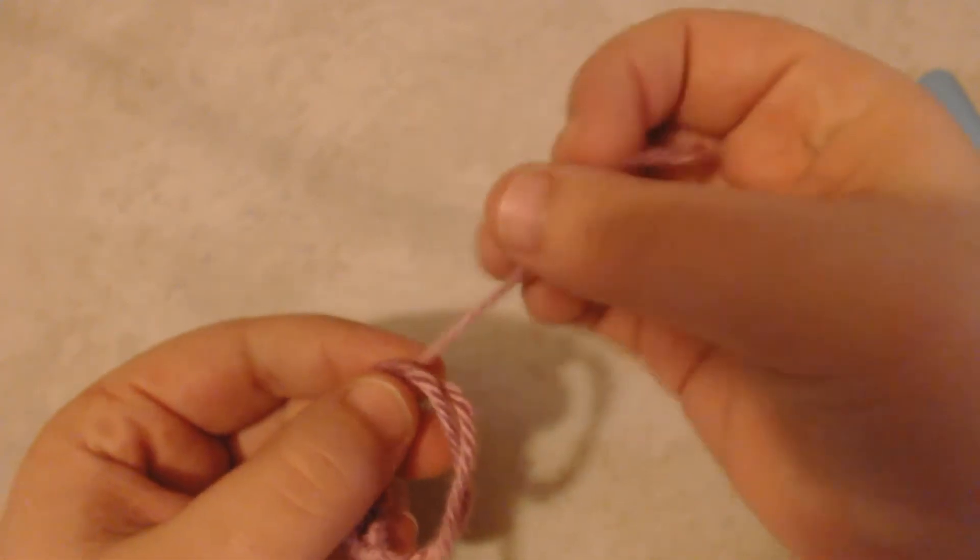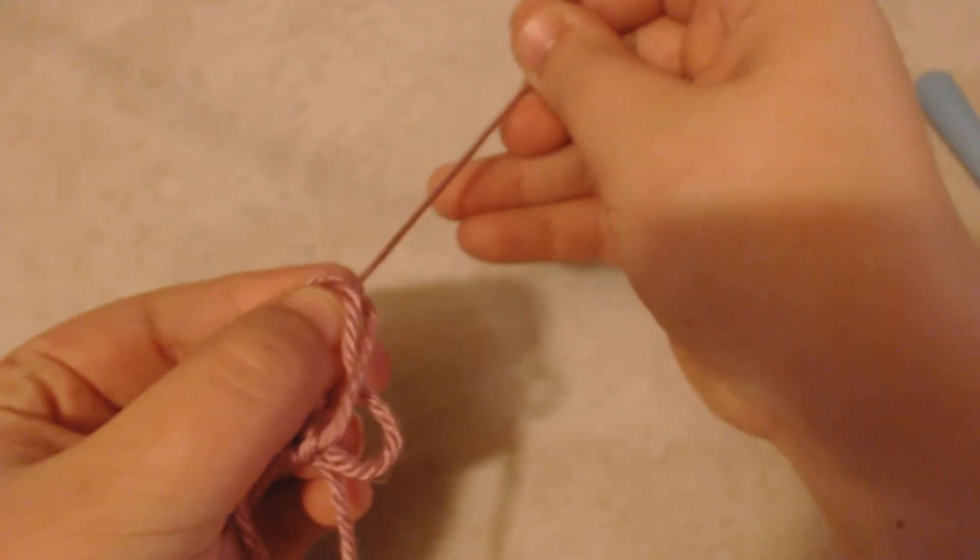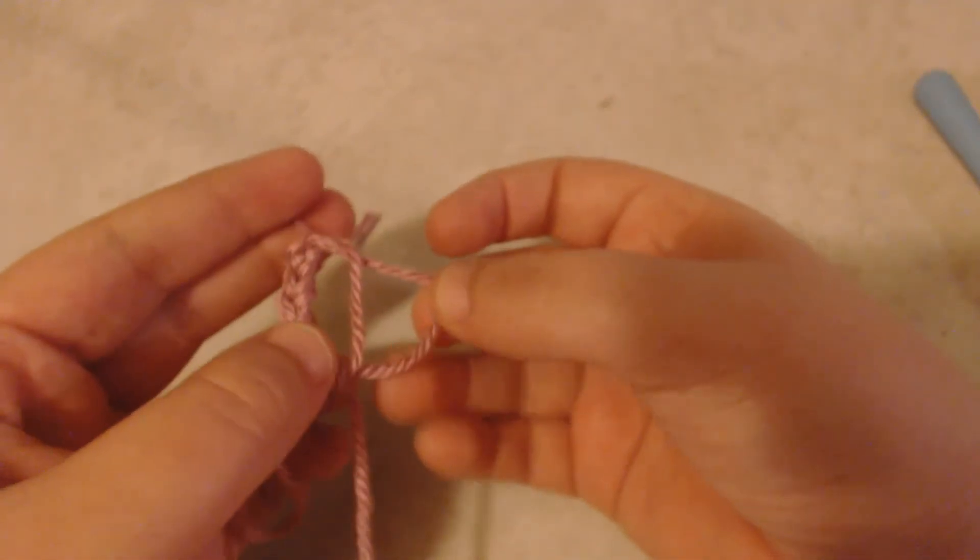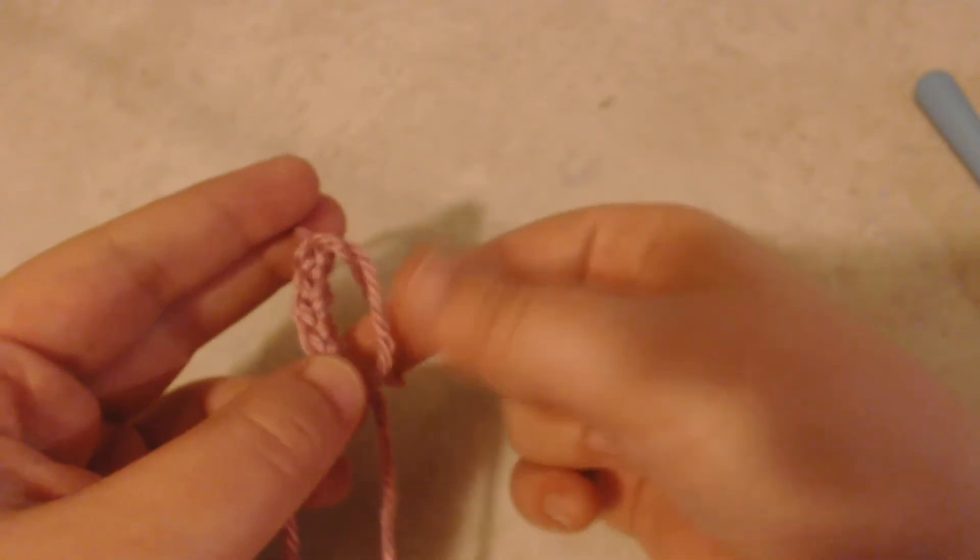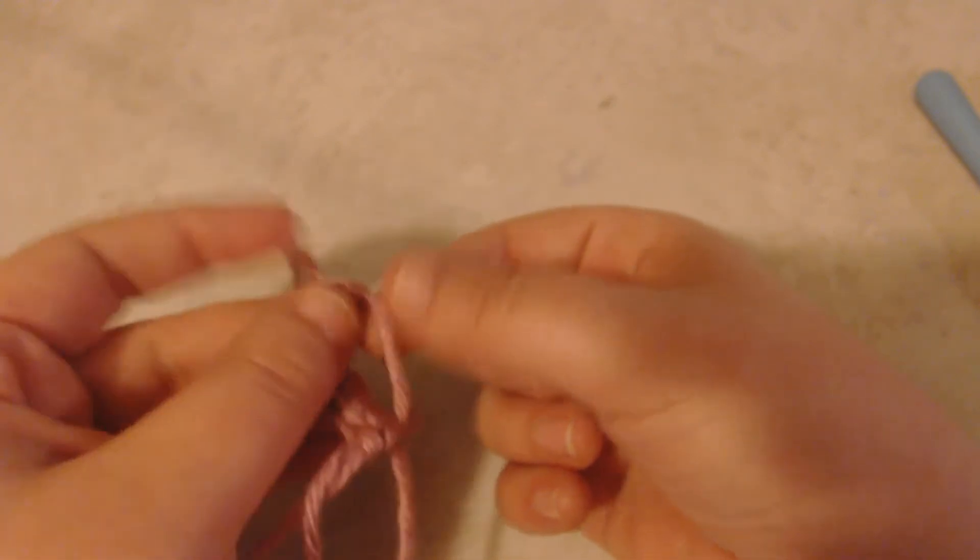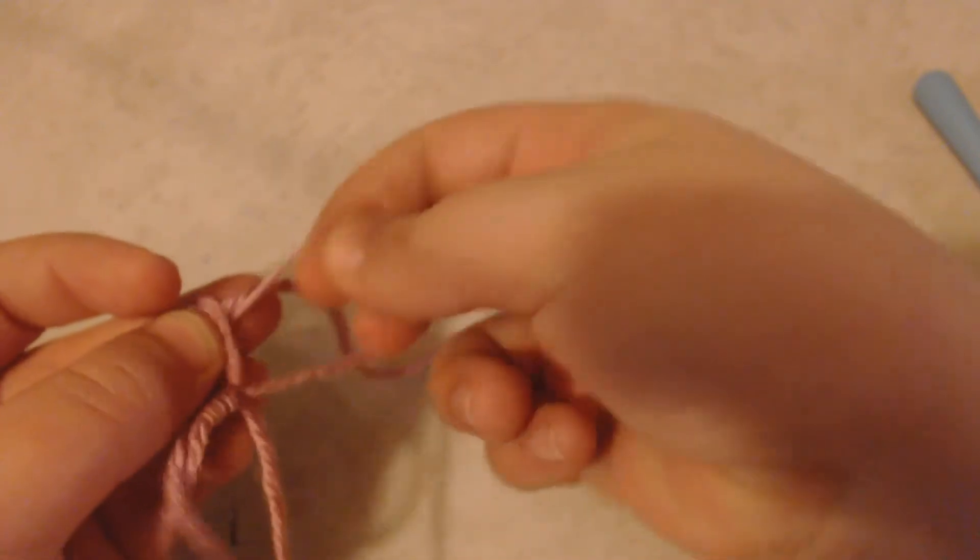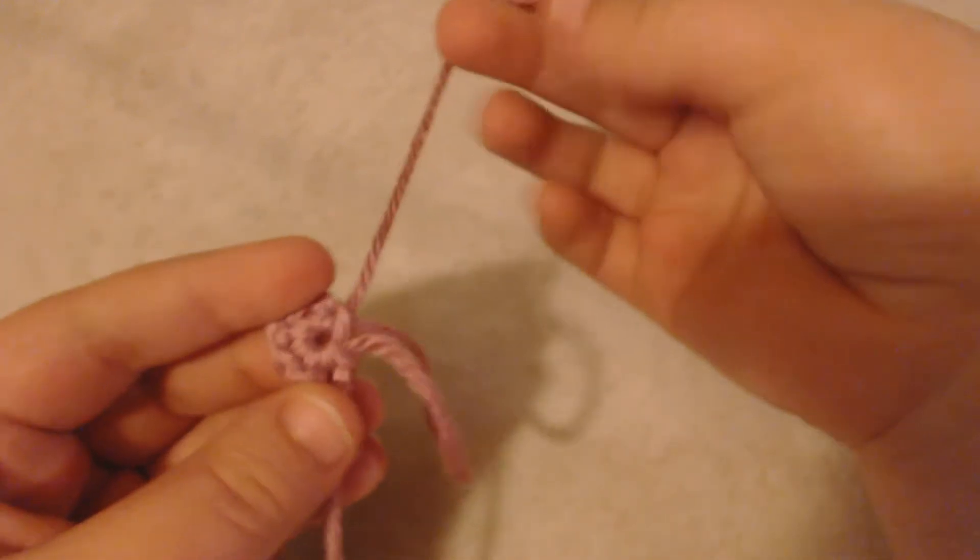First I'm going to pull on the tail a little bit so that I have one bigger loop and one smaller loop. Then I'm going to find that smaller loop and pull it from the side that's closest to the tail until the other loop closes completely. And then I'm going to pull on my tail until this loop closes.